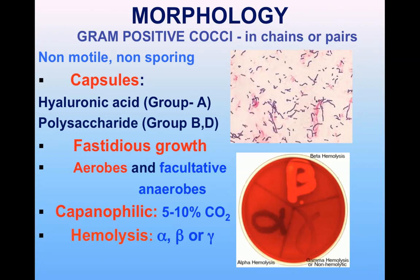They are aerobes or facultative anaerobes, meaning they are capable of growing both in the presence and absence of oxygen. Capnophilic bacteria require 5–10% carbon dioxide for their growth. Hemolysis can be alpha hemolytic, with partial destruction of RBCs producing greenish discoloration around the colonies, or beta hemolysis where RBCs are completely lysed producing a clear zone. The third group are the non-hemolytic or gamma hemolytic streptococci.